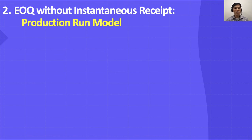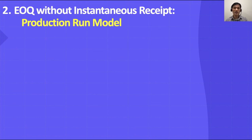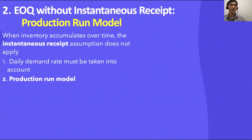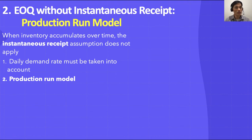The second model we want to look at is EOQ without instantaneous receipt, called the production run model. This model assumes that in your business you cannot receive inventory instantaneously — it takes time. When inventory accumulates over time, the instantaneous receipt assumption used in the basic EOQ model does not apply, so we must account for the daily demand rate.